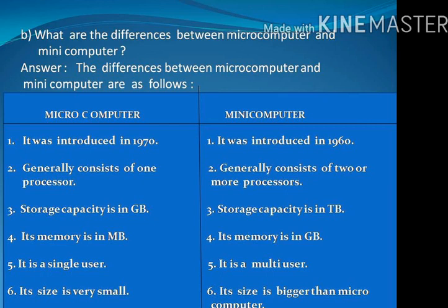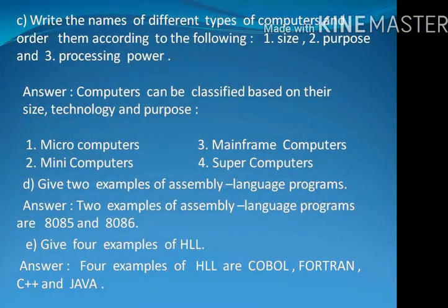Number 4: Microcomputer's memory is in MB; minicomputer's memory is in GB. Number 5: Microcomputer is a single user, but minicomputer is multi-user. Number 6: Microcomputer's size is very small; minicomputer's size is bigger than microcomputer.